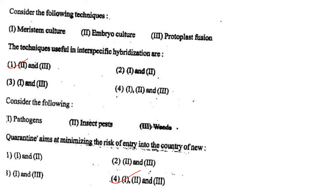Next one: Consider the following — pathogens, insect pests, weeds. Quarantine aims at minimizing the risk of entry into the country of new option 1, 1 and 2; option 2, 2 and 3; option 3, 1 and 3; option 4, 1, 2 and 3. Answer is option 1: 2 and 3 — that is pathogens and insect pests.